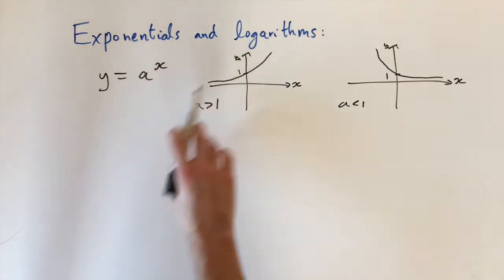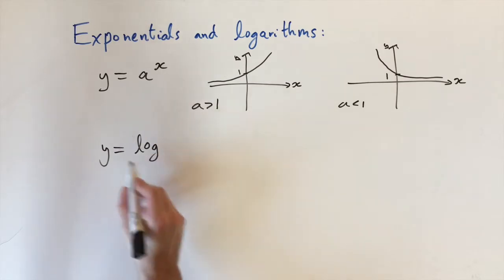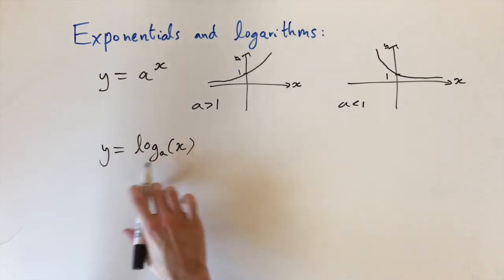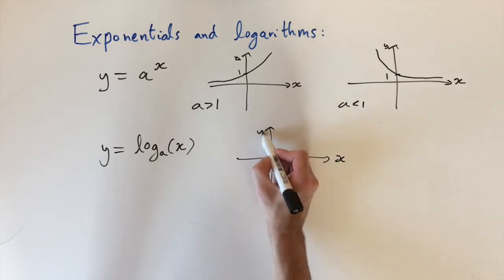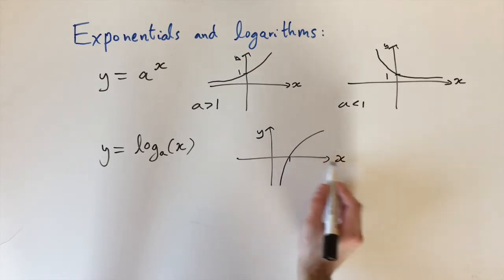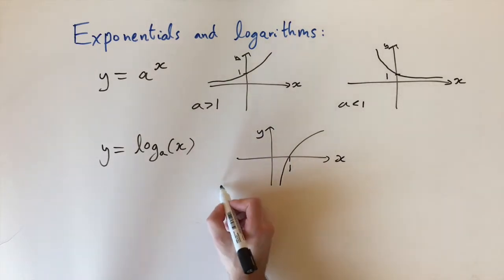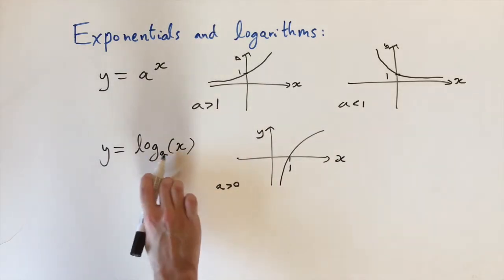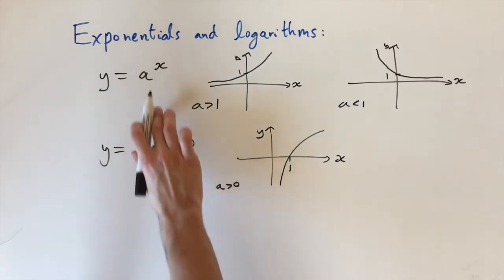On the other hand, a logarithm is a function of the form y equals log base a of x. I'm going to show you what this looks like and then explain what it means. Sketching it in the xy-plane, the x-intercept where it crosses the x-axis is always 1, no matter what a is. Typically we consider positive bases. The logarithm is defined as the inverse of the exponential.